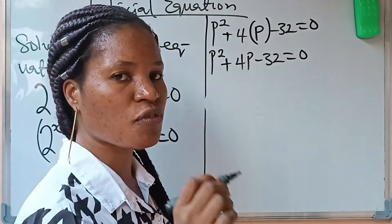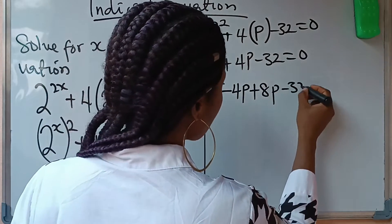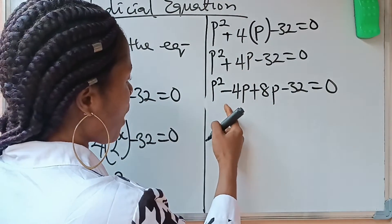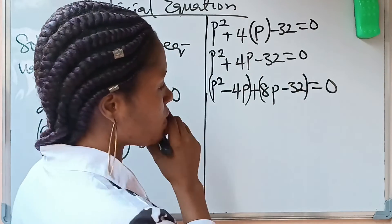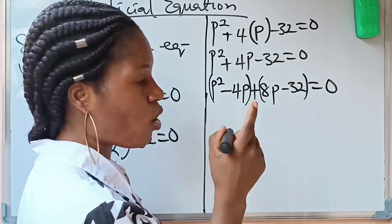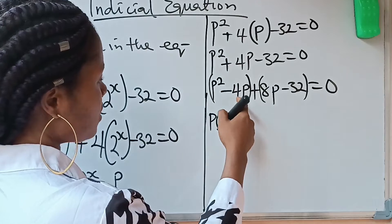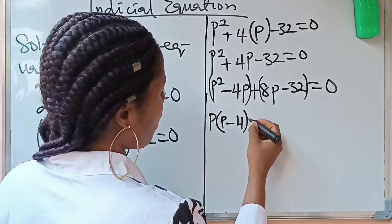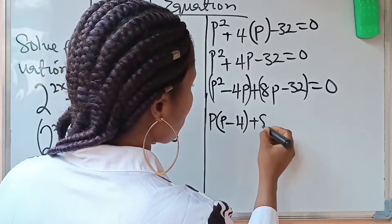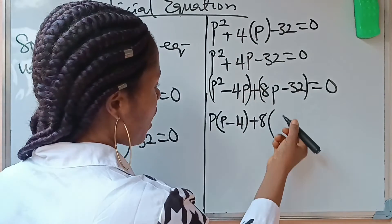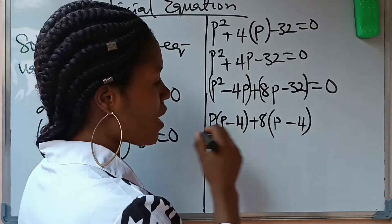So we replace this 4p with minus 4p and plus 8p. We have p squared minus 4p plus 8p minus 32 equals 0, because 8p minus 4p gives us 4p — we have not changed anything. Now we group in twos and factorize. p squared and minus 4p have p in common, so we get p(p minus 4). Then 8p and minus 32: this 8 divides 8p to give p, and divides minus 32 to give minus 4, so we get 8(p minus 4). Equal to 0.